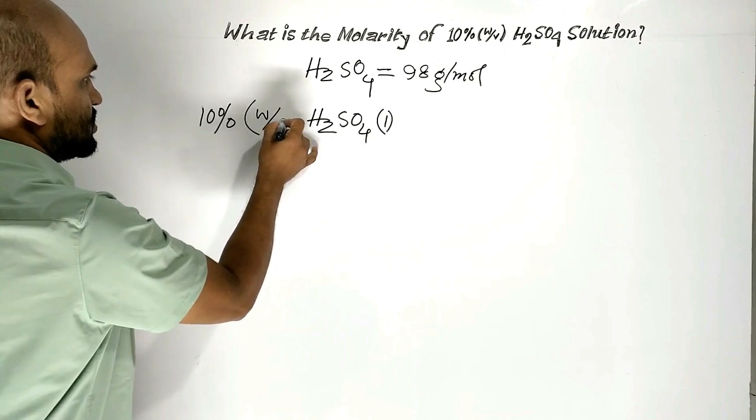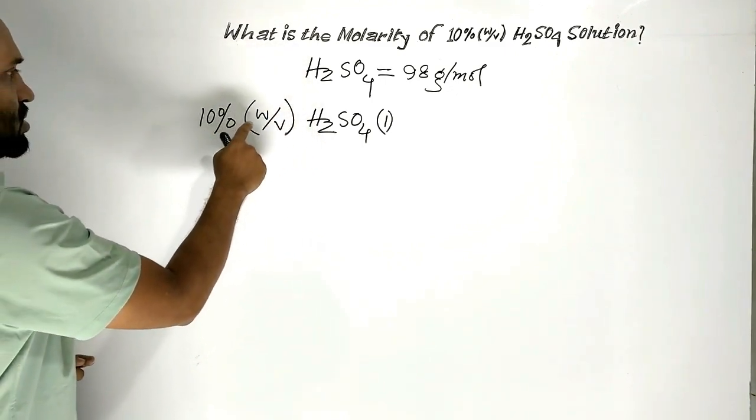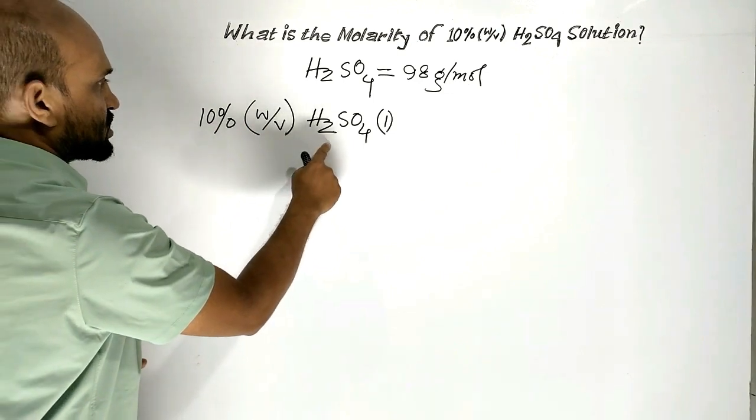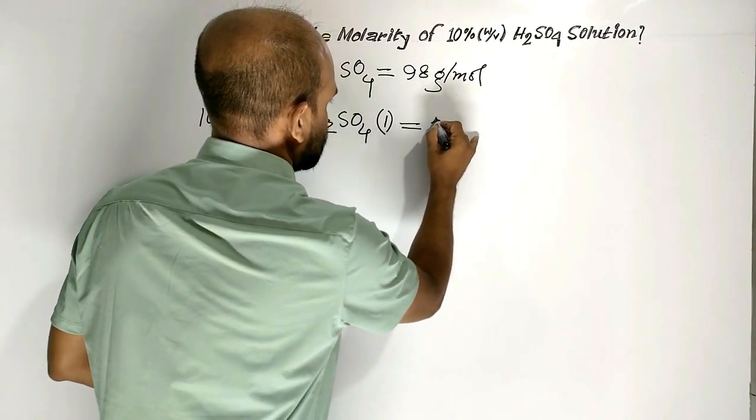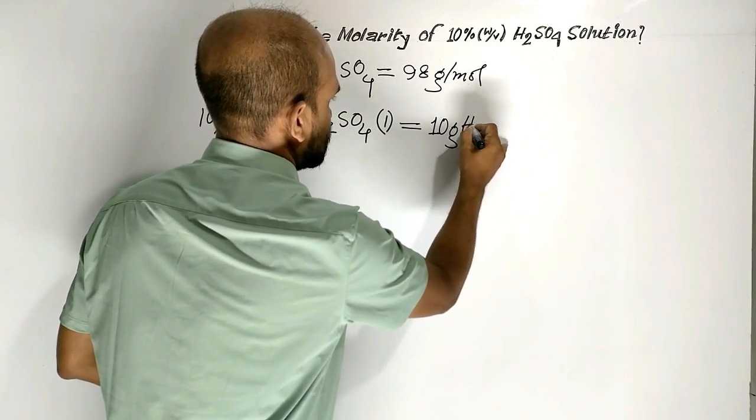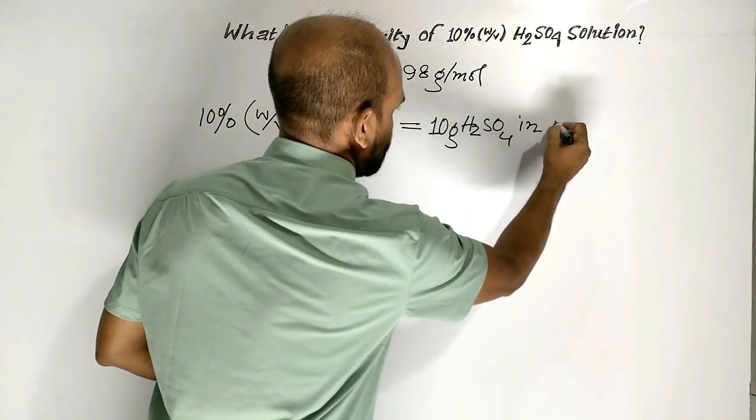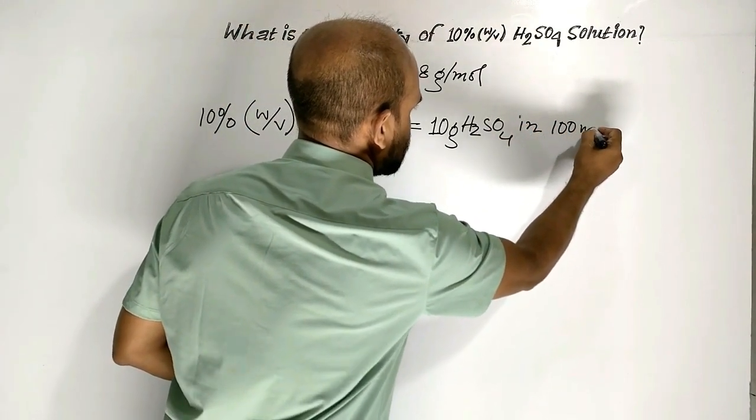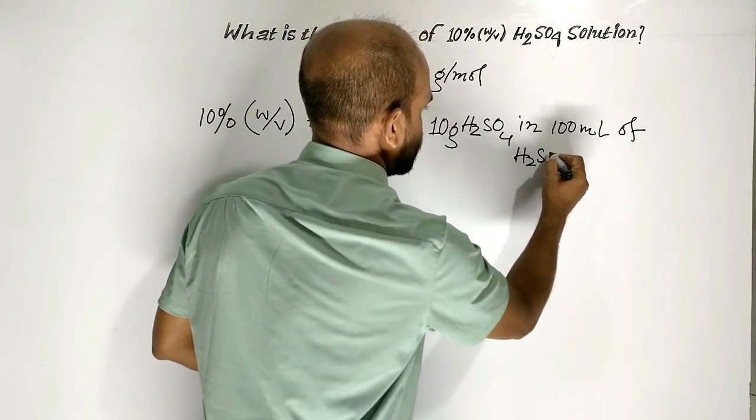So 10% mass by volume unit of sulfuric acid is equal to 10 grams sulfuric acid in 100 milliliters of sulfuric acid solution.